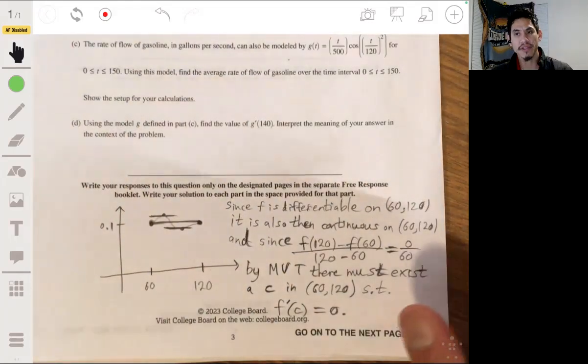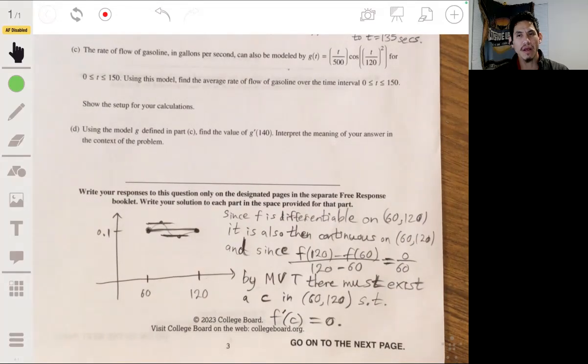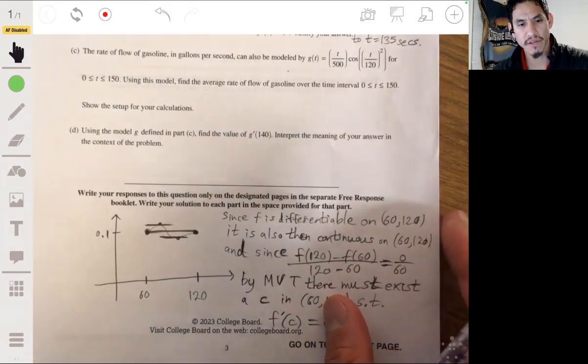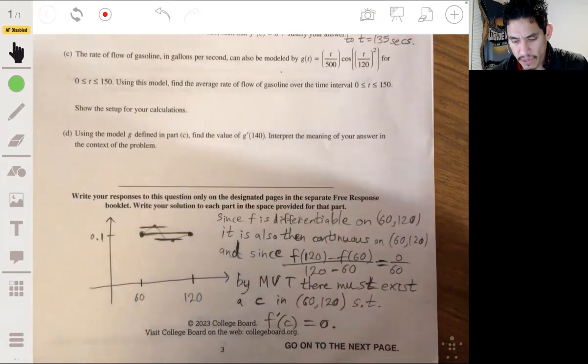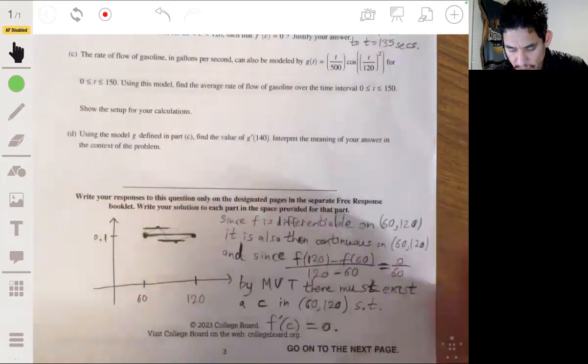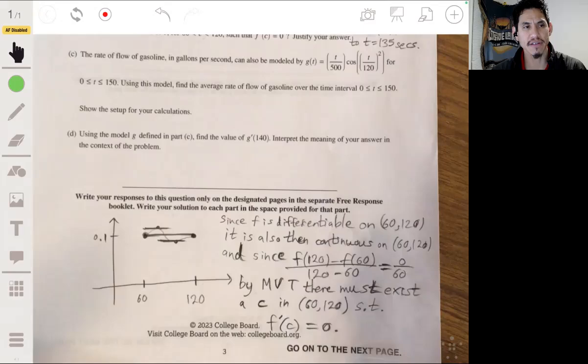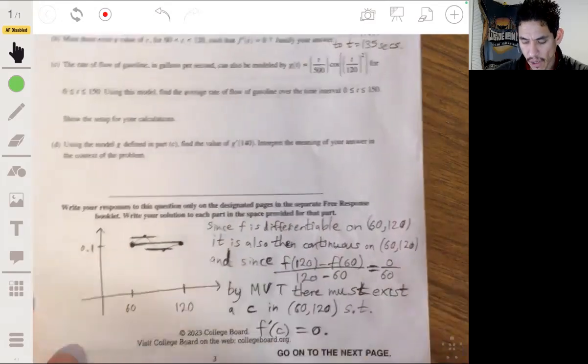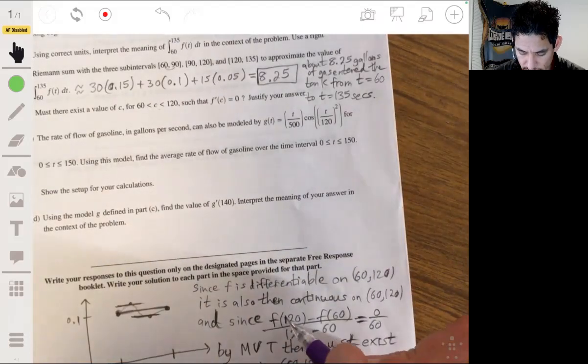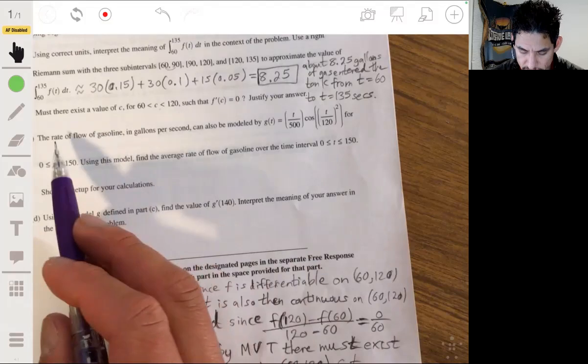But again, you can also use Rolle's theorem as long as you explain it or address it correctly. But I don't know how these graders sometimes grade. Sometimes some of them are just really strict about certain things. Some understand that just because you don't write it in a perfectly formal mathematical proof way doesn't mean you don't understand it, but we'll see what happens. Let me know if you have a question about that.